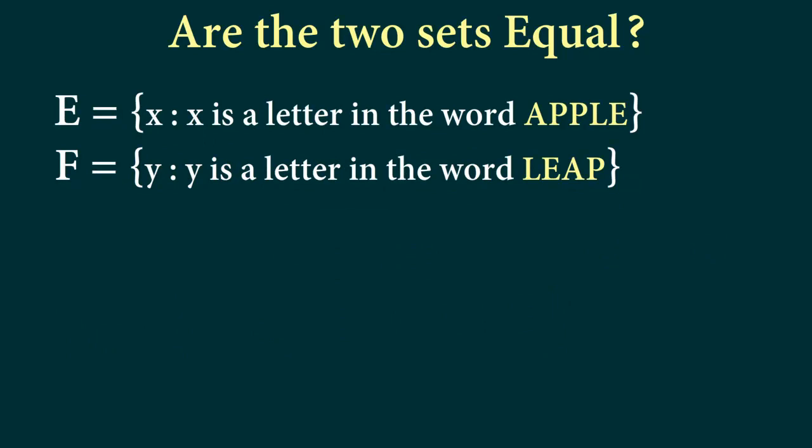Here both of the sets are given in set builder form. So let's convert each of them in roster or tabular form. So let's start with set E. So E is equal to, so E actually contains element X where X is a letter in the word apple. So then E will contain A, then P. So we have A, P, P, L, E. So A, P, L, E. So why did we not write P twice? Because remember that we do not repeat elements in a set. So even though we have here two Ps, we represent them with only one P.